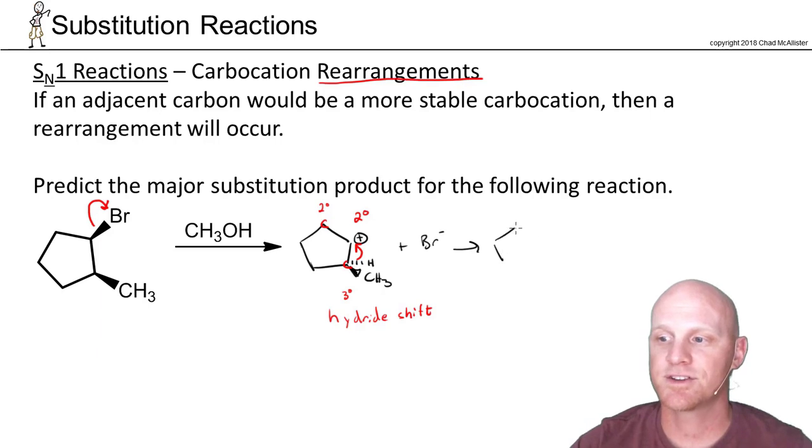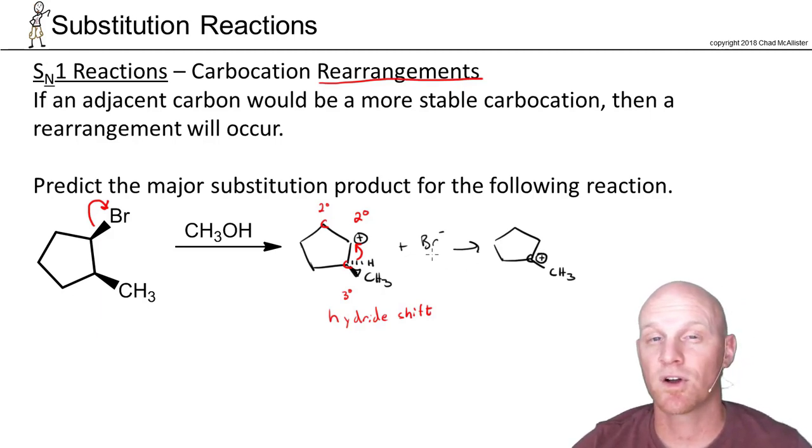Once the hydrogen reattaches to the secondary carbon, that carbon now has four bonds. But this carbon is now the one with only three bonds, so it's now the carbocation. It's no longer sp3 hybridized but sp2 hybridized—no longer tetrahedral but trigonal planar. That's why I've drawn the bond to the methyl group as a straight line to reflect the trigonal planar geometry.